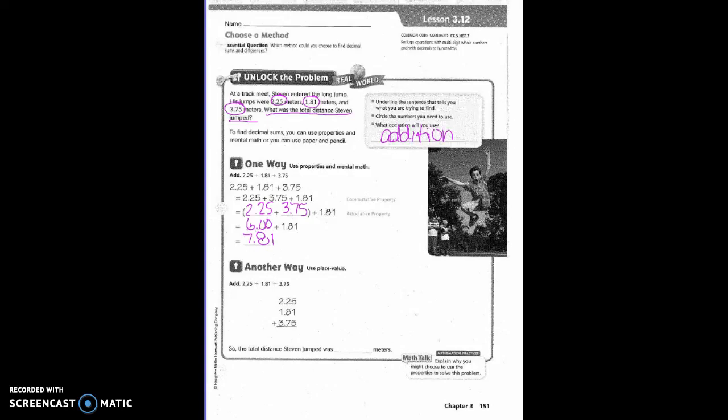That was one way. Another way is just to line up your decimals and then your place values and go ahead and add. So what's the first thing I do? Line up my decimals and put down my decimals before I start adding any of the other places. 5 plus 1 plus 5 is 11. Put a 1, carry the 1. 1 plus 2 plus 8 plus 7 is 18. Put an 8, carry the 1. 1 plus 2 is 3, plus 1 is 4, plus 3 is 7. So the total distance Stephen jumped was 7.81 meters.